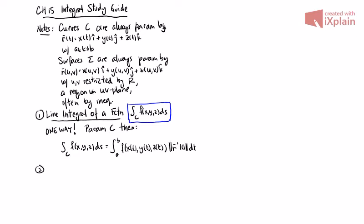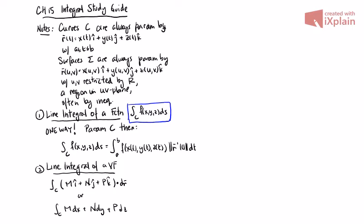Second, line integral of a vector field. This showed up in two different forms. We could see this as integral over C of (m i + n j + p k) dot dr, or as integral over C of m dx + n dy + p dz. These mean exactly the same thing, just two different notations. So we have four different ways that we could tackle these.